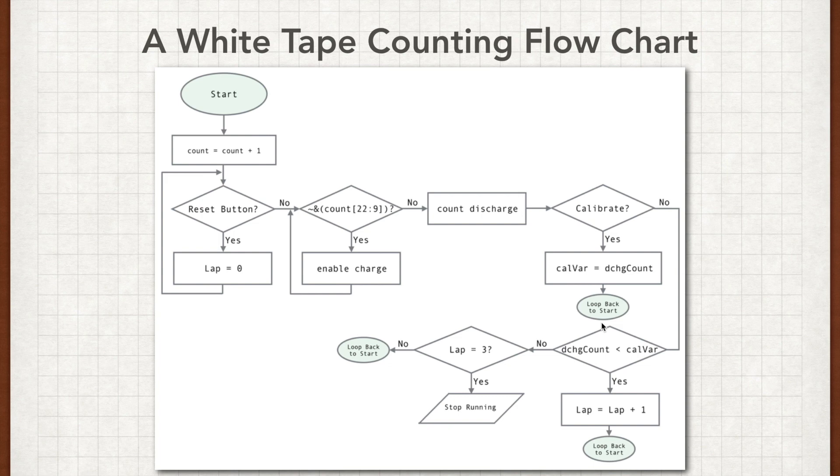So this is actually a diagram, a flow diagram for the program that we use for this IR sensor project. So we'll kind of quickly go through this. You've got your start, you start out here. You're always going to use a counter as we always do with these programs. Then you have a reset button. Our reset button, if it's reset, then we're resetting our laps. So if you're holding down a reset button, it'll set our laps back to zero. Otherwise, we're going to do a not and on count 22 down to nine. If not and is one, then we're going to enable the charge. Otherwise we're just going to move on and count the discharge. So how long does this thing take to discharge?